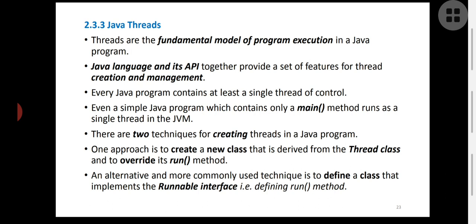The first approach to create a thread in Java is to create a new class derived from the parent class called Thread. That Thread class already has one method called run with some parameters. We create a child class derived from this Thread parent class, and since the parent class contains a run method, the child class can have the same method name and parameters — because we are overriding the run method from the parent Thread class.